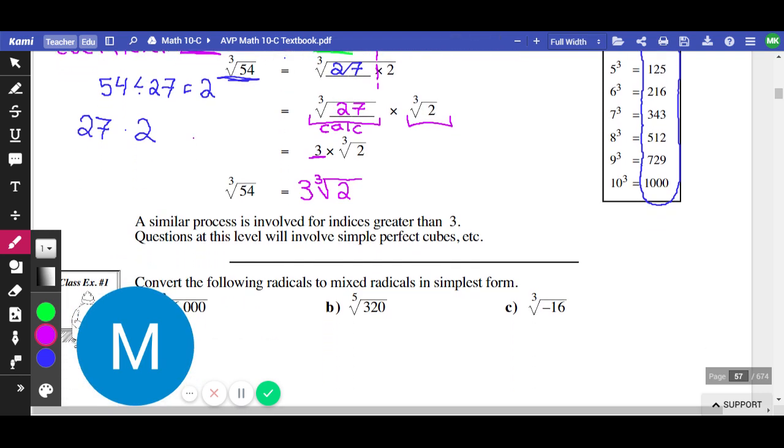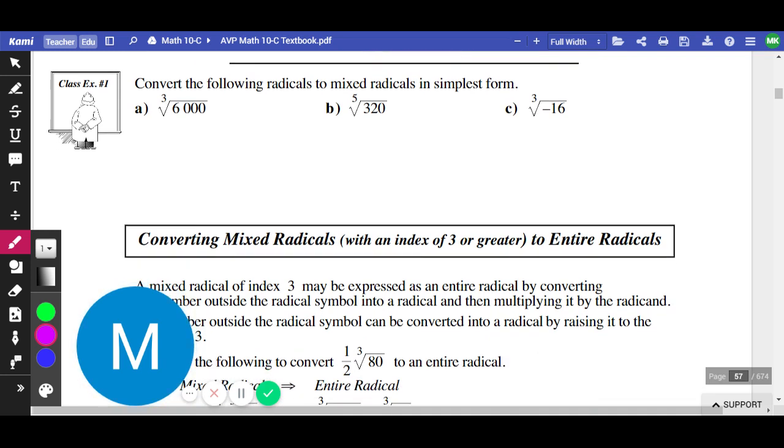Let's practice a little bit. We've got cube root 6,000, cube root 520, and cube root negative 16. We're not going to do B as a class. The reason we're not doing B as a class is because the index is a 5. We don't work with indexes beyond 3. If you want to challenge yourself, feel more than welcome. We'll look at A together. Cube root 6,000. The first thing is it says to simplify it, I need to know what that means. That means convert so it has a coefficient. That's my goal.